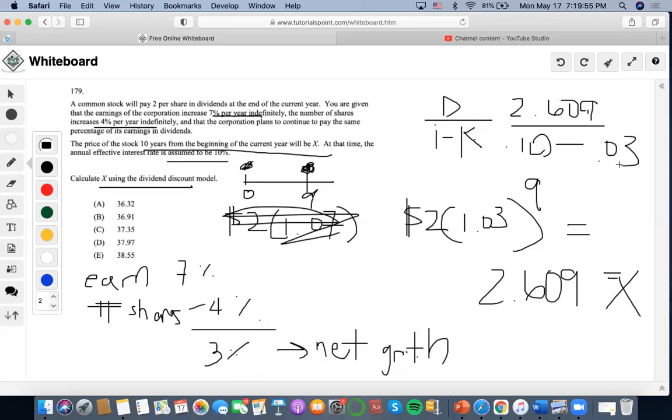Then we just do that divided by 0.07, and we're going to get 37.2792. And from what I see here, A and B are out, E is out. I only have a 0.27 decimal, so it would be closest to answer C.